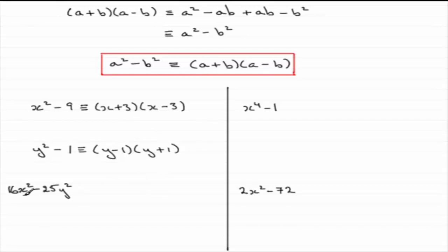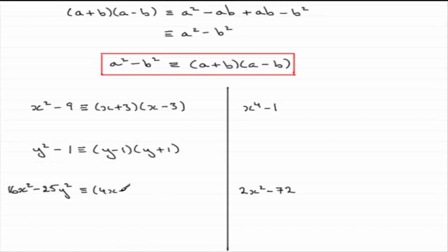In this example, I picked it just to show you that you can have numbers and letters all mixed together in the same term, but it is still the difference — the minus between two squares. This is the square of 4x: 4x times 4x gives 16x squared. And this is the square of 5y: 5y times 5y is 25y squared. So we can write this down as 4x minus 5y multiplied by 4x plus 5y.